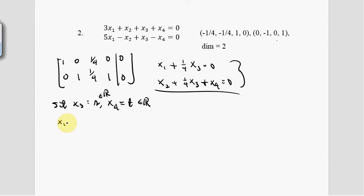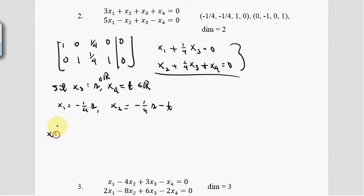That means x1 is negative one-fourth s. x2 is negative one-fourth s minus t. X equals [x1, x2, x3, x4], which is [−1/4 s, −1/4 s − t, s, t]. I'm going to group the s's together and the t's together.